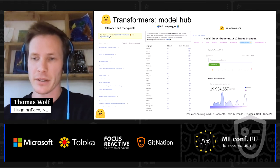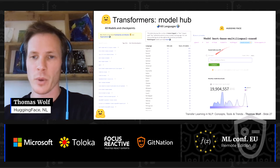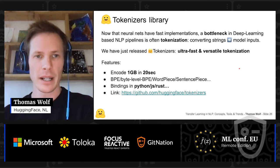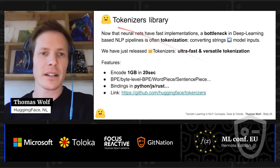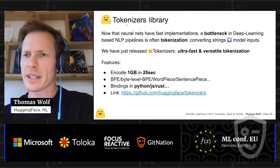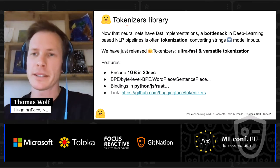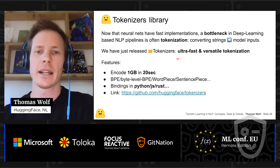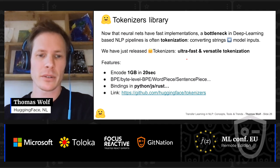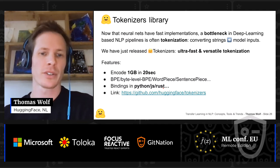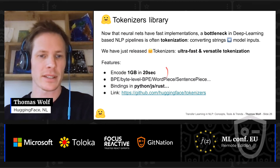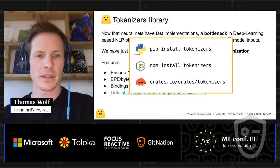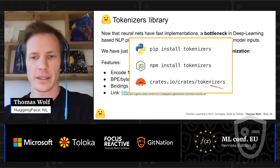You can play with the models directly in the web interface at huggingface.co. More recently we open-sourced a second library called Tokenizers, which handles the string-splitting-to-integers step. This was a bottleneck in terms of speed, so we wrote it in Rust — a very fast, low-level language — which makes tokenization really fast.